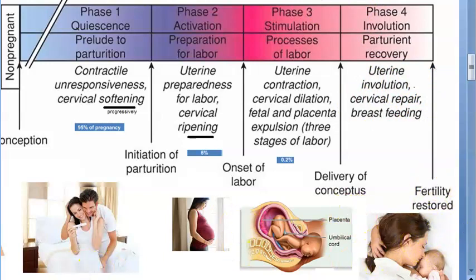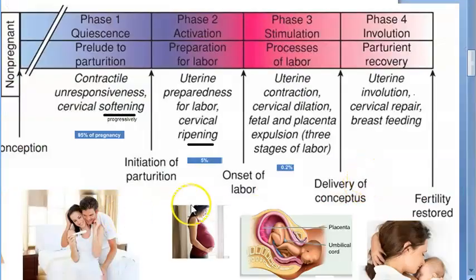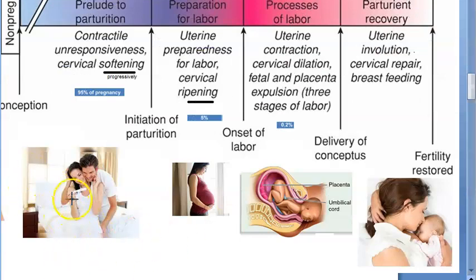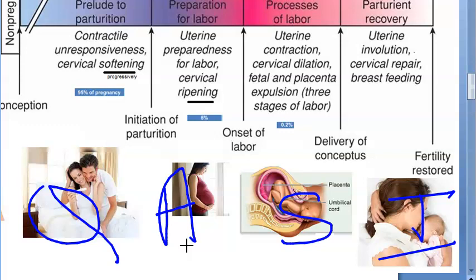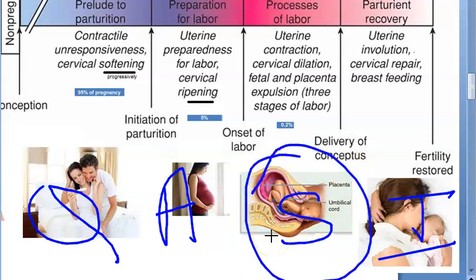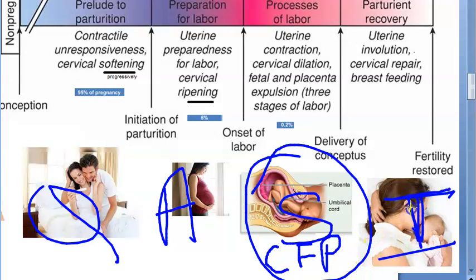Look at the photos to understand more. Phase one is quiescence — prelude to parturition, 95% of pregnancy, cervical softening. Phase two is activation — cervical ripening, preparation for labor. Phase three is stimulation — process of labor — with cervical dilatation, fetal expulsion, placental expulsion, then one hour of observation.